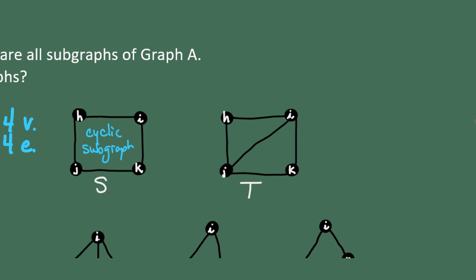Let's look at graph T on the other hand. Graph T still has four vertices, but it has an extra edge. One, two, three, four, five edges. That also causes vertex I and vertex J to have degree three. So this is not a cycle. So graph T is not a cyclic subgraph.